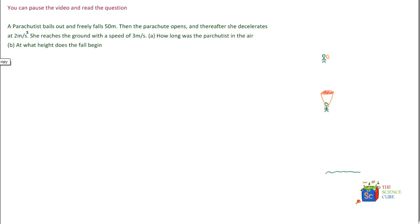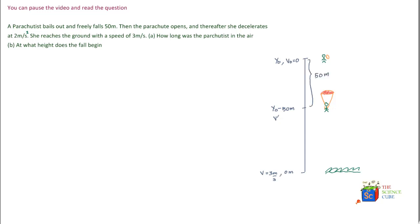Here's a problem where a parachutist bails out of a plane and drops 50 meters. His initial position is y0 and his initial velocity is v0, which is 0. Then 50 meters down his parachute opens, so his new position is y0 minus 50 meters and his velocity is v'. Finally he hits the ground at 0 meters with a known velocity of 3 meters per second.